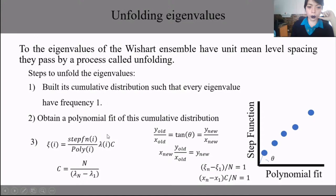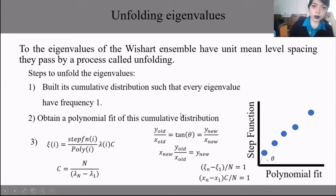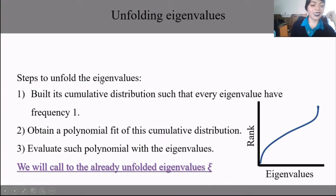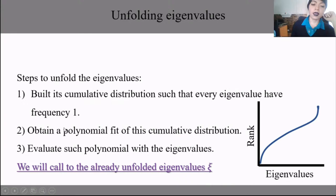The approach that ultimately worked is to build the step function with the rank on the y-axis and the eigenvalues on the x-axis, obtain the polynomial fit, and evaluate the polynomial on the eigenvalues. These evaluated values become the unfolded eigenvalues. That concludes the talk.